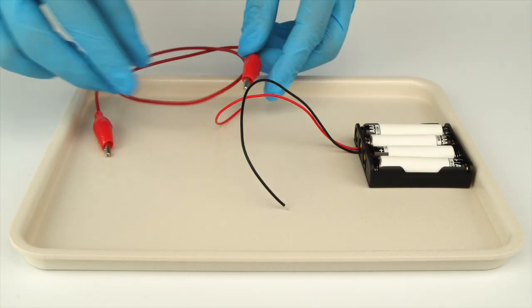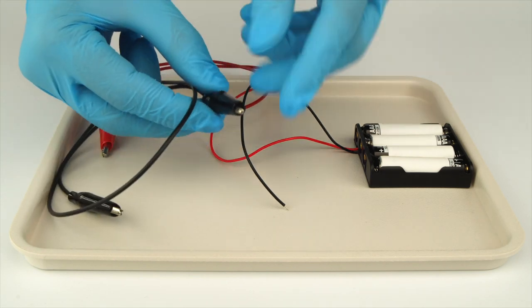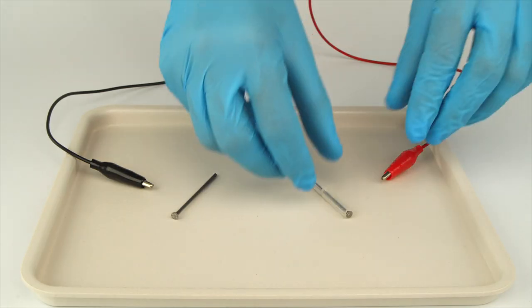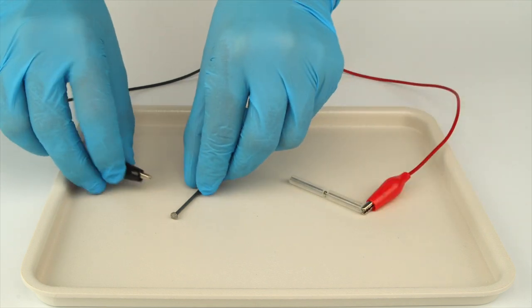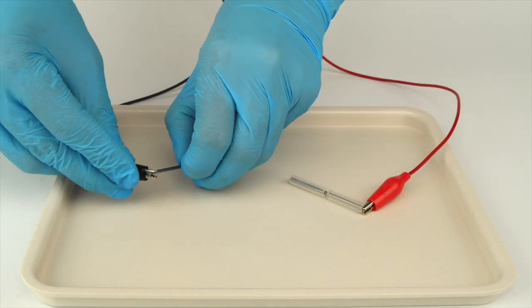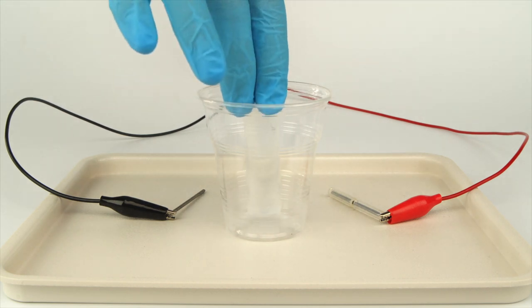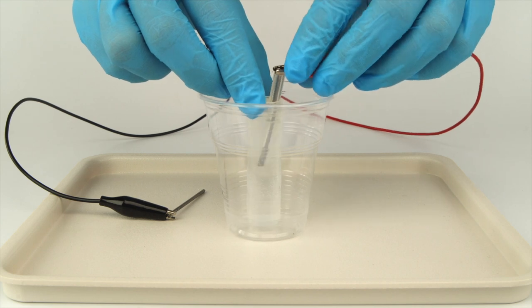Connect the red crocodile clip to the red wire and the black crocodile clip to the black wire. Connect the red crocodile clip to the head of the protected nail and the black crocodile clip to the head of the unprotected nail. Put the nails connected to the batteries into the salt solution. Make sure the crocodile clips aren't touching.